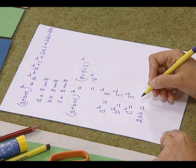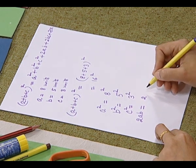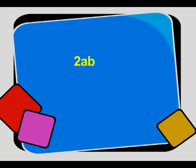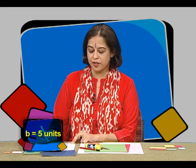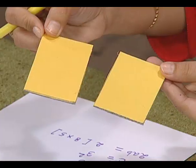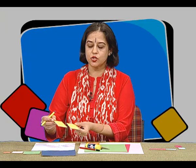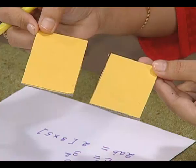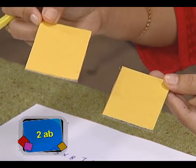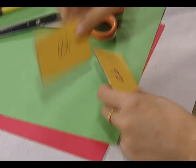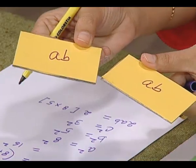Now we will take the other terms. The next term is 2ab. For representing 2ab, we will take two rectangular cut outs of dimensions 8 units by 5 units. These two pieces are representing 2ab — each one of them is representing ab. So we have two rectangular pieces representing ab.